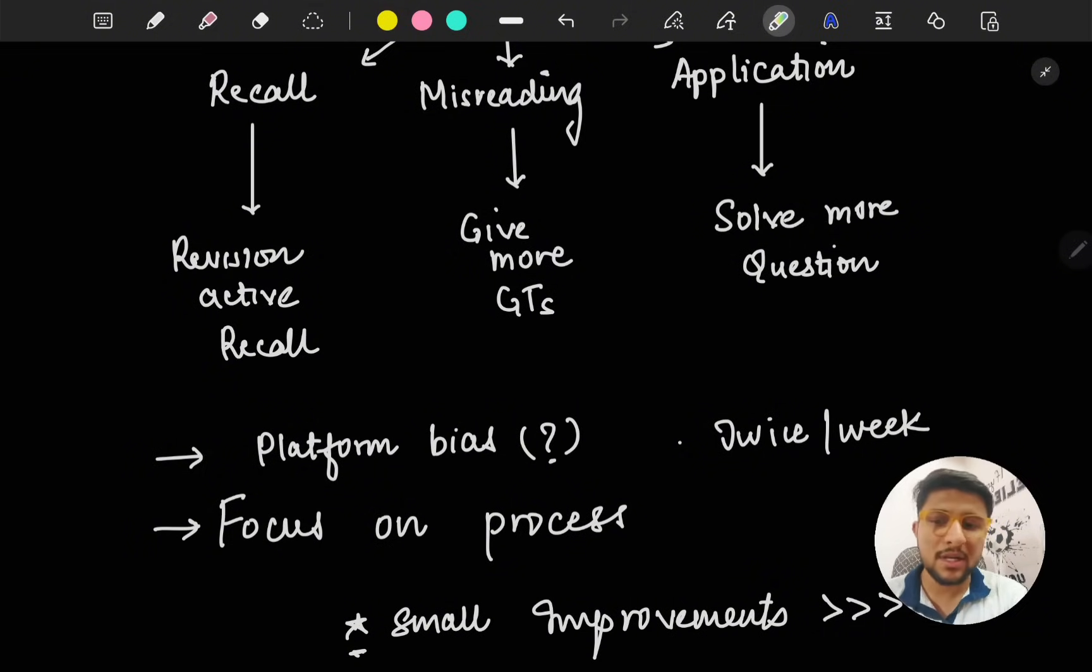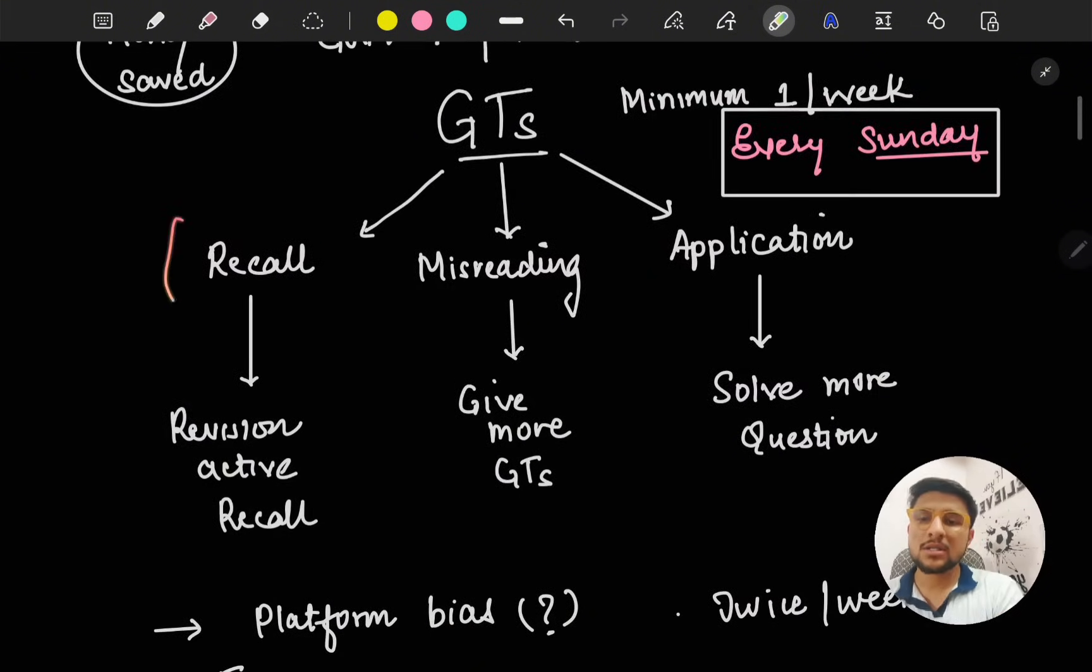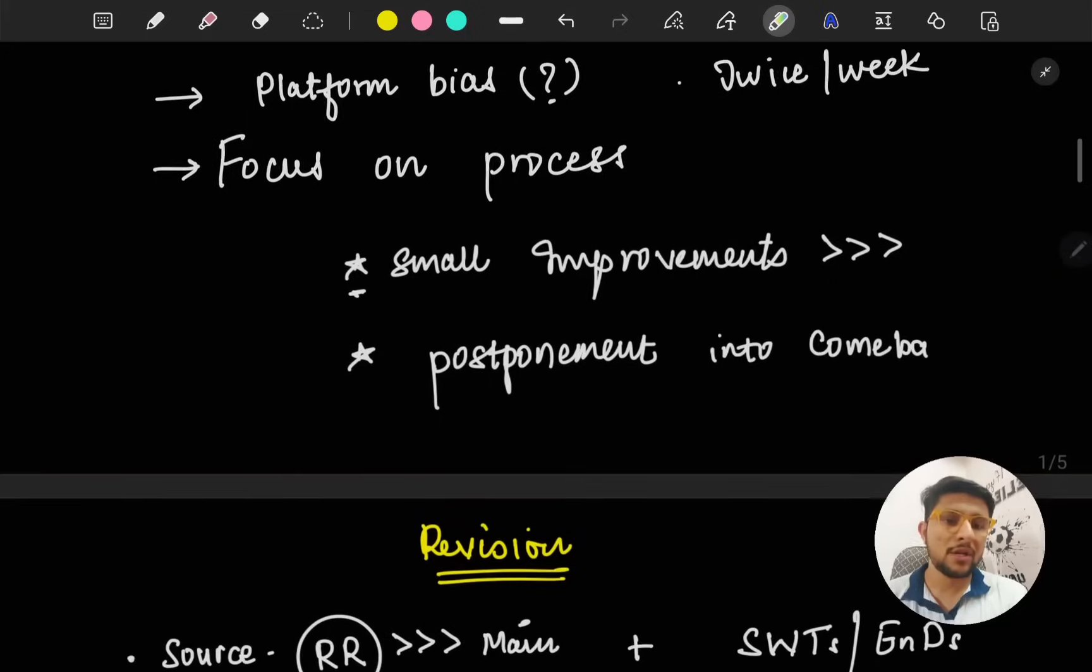The third thing is platform bias. If you give more than 20 or 25 GTs, you have pattern recognition - you know what that platform is going to ask. After solving the question bank and 20+ GTs, there will be bias. To remove that bias, try multiple platforms. There are free GTs available on every platform. If you're stuck at more than 140 plus, I highly recommend giving GTs twice a week to analyze and improve. This is how I removed my plateau from 140-150 where I was stuck for a long time.